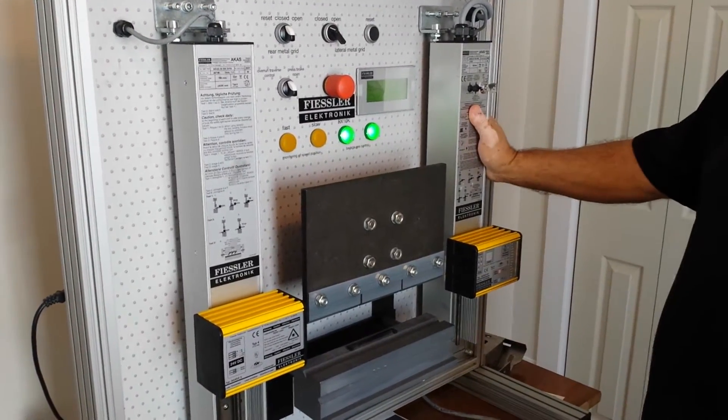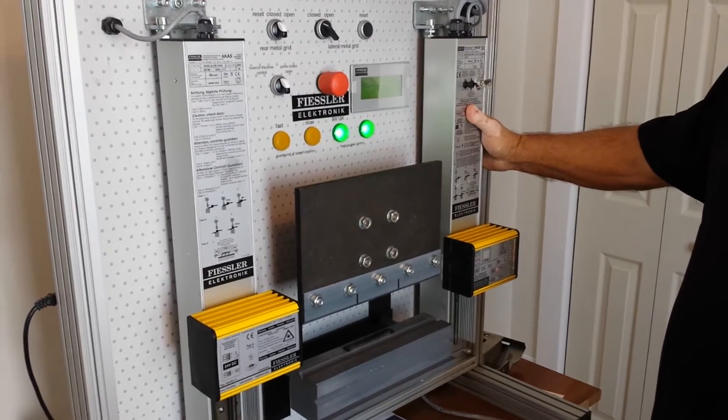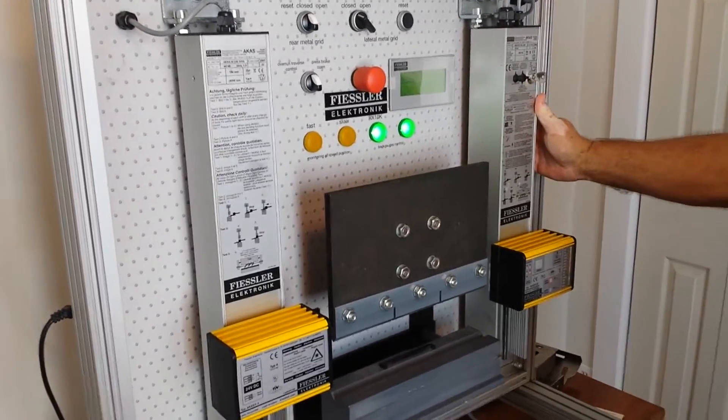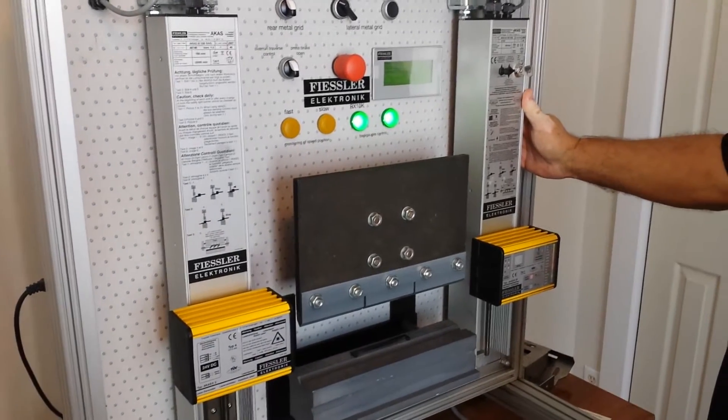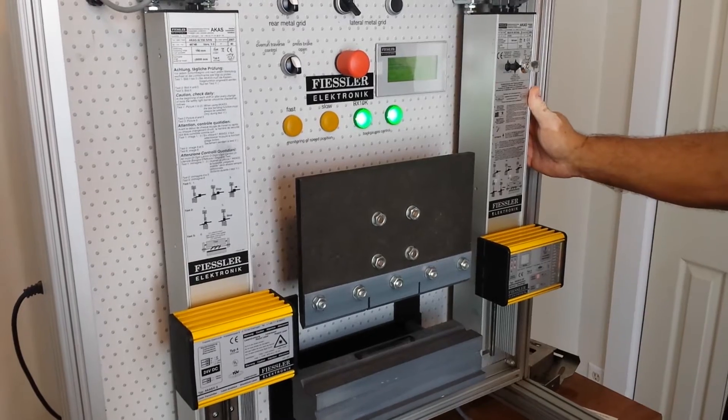Hello. We're here to demonstrate the ACAST safety laser for press brakes today. This model is the Fiesler ACAST-2F and it is equipped with an automatic setup for change over punch tips.